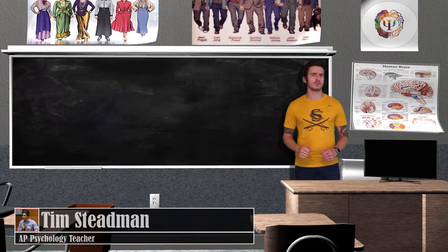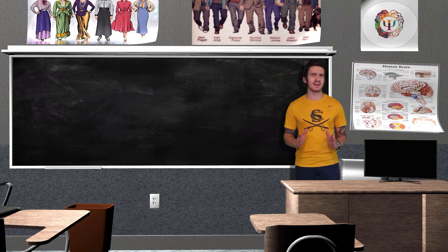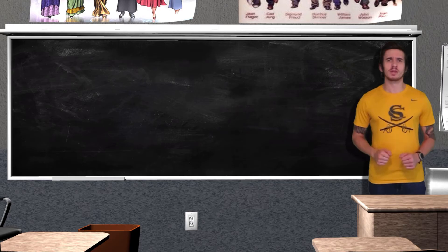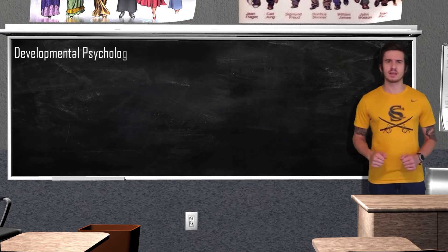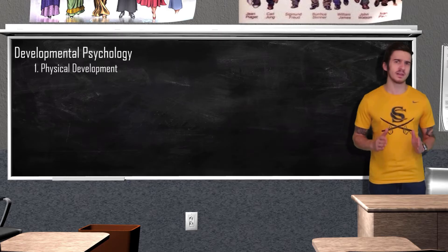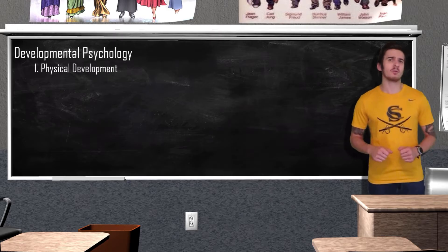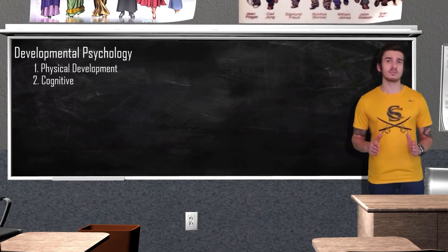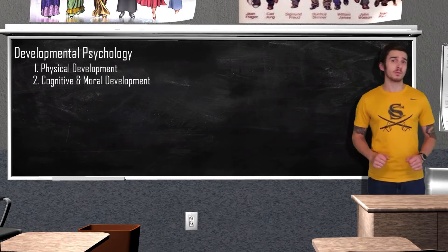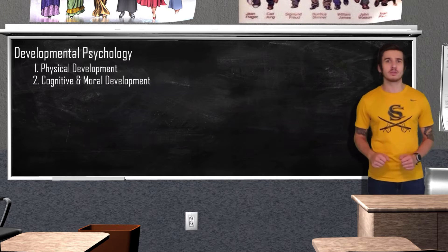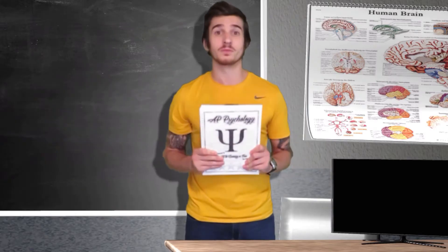Hello AP Psych class and welcome back to our virtual classroom for another AP Psychology unit review. This review video will be all about Unit 6, Developmental Psychology. We'll start with how physical development can affect us psychologically, then look at how thought processes change as we age through cognitive and moral development, and end with how genetics and environment affect our social and emotional development. Don't forget to follow along with your review guide.